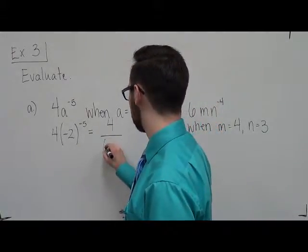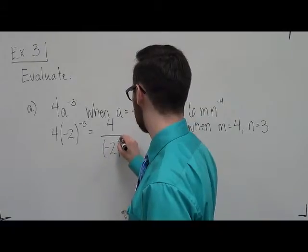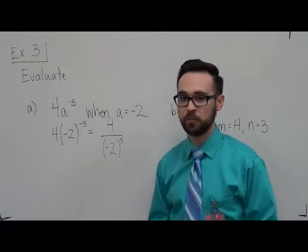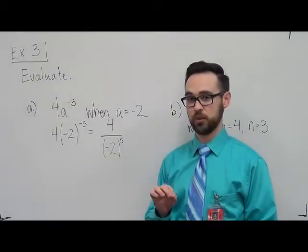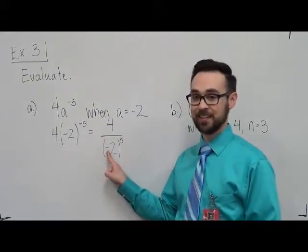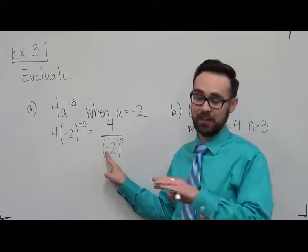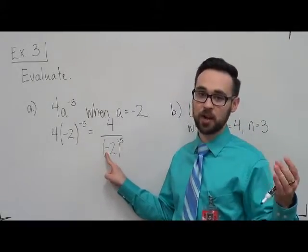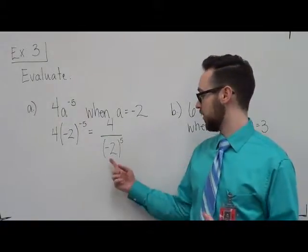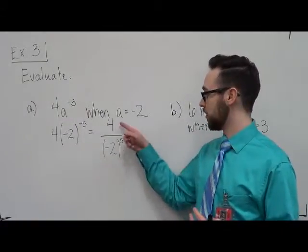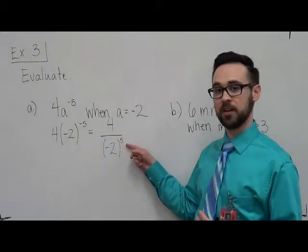The negative 2 goes to the bottom, and the 5 now becomes positive. Only the exponent changed from a negative to a positive. This is just a negative 2. It has nothing to do with whether it's on the top or whether it's on the bottom. So you don't change the actual value of the number. The only thing that changes when you move it to the bottom is the 5.